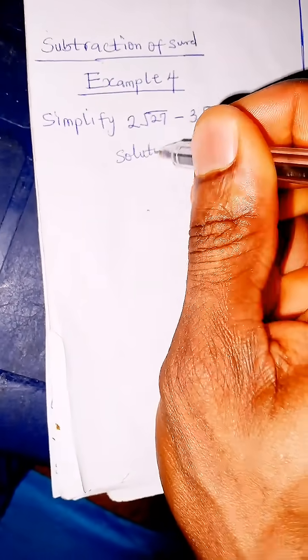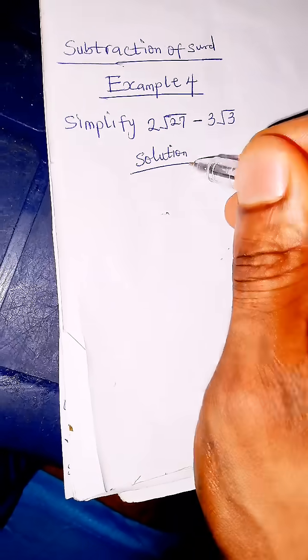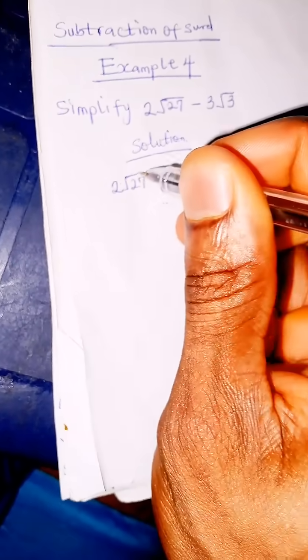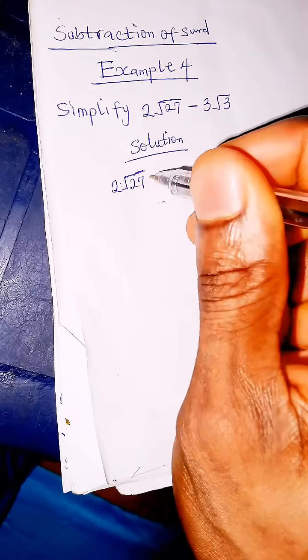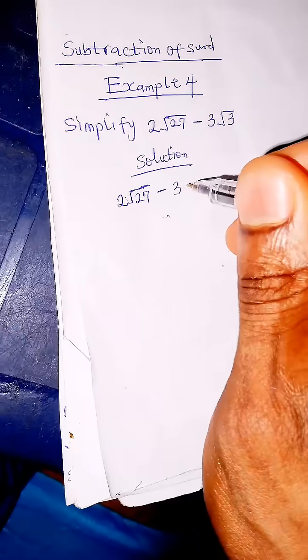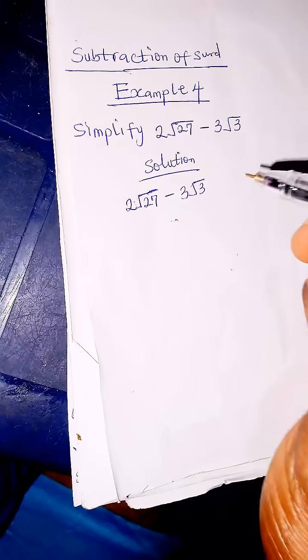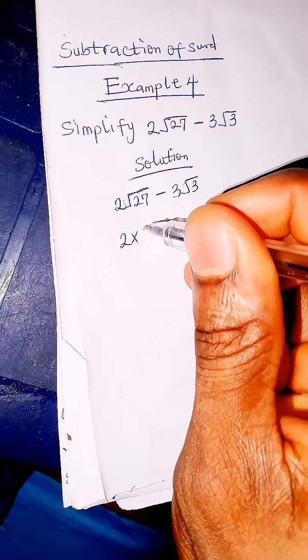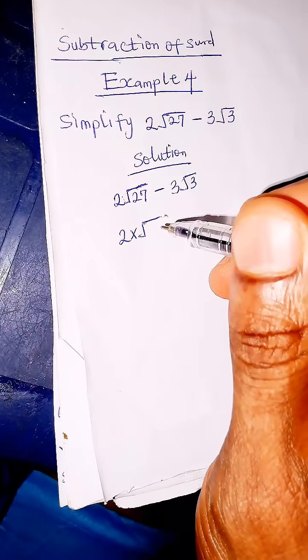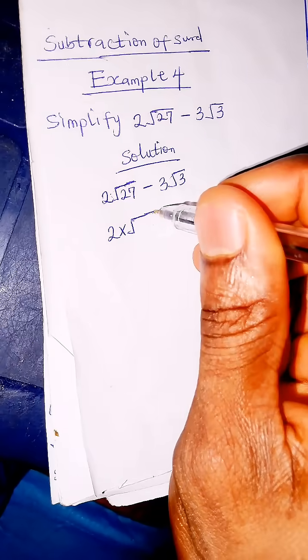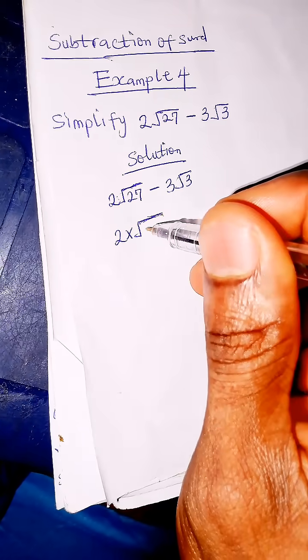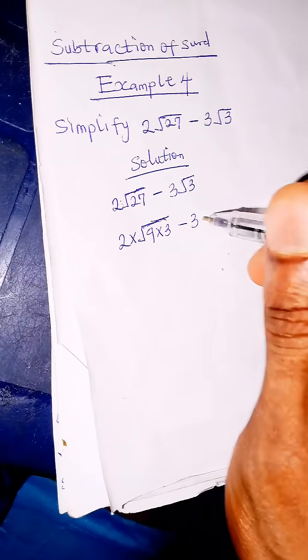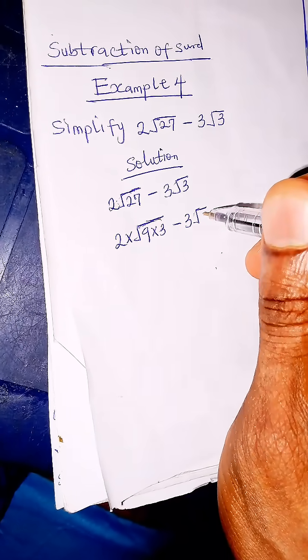Solution: we have 2 root 27 minus 3 root 3. To simplify root 27, we look for what rational number we multiply with an irrational number. 9 is a rational number. So 9 times 3 equals 27.